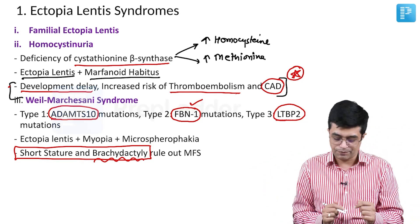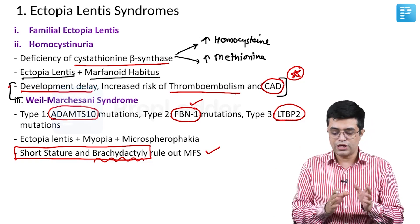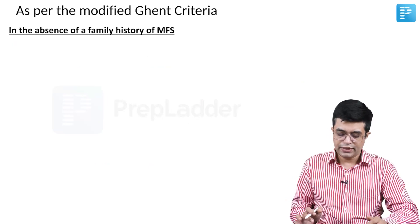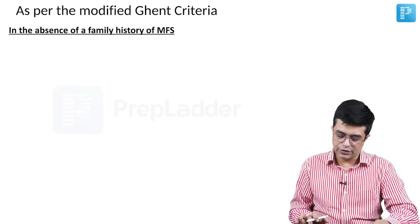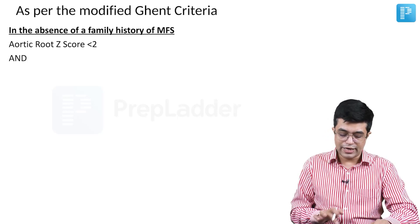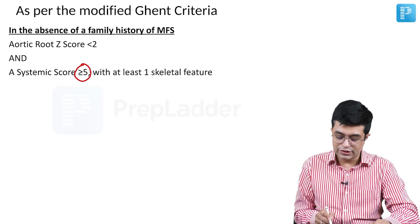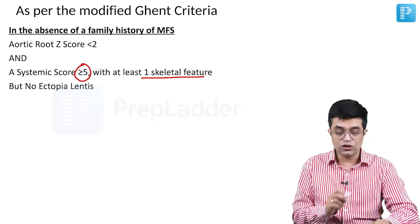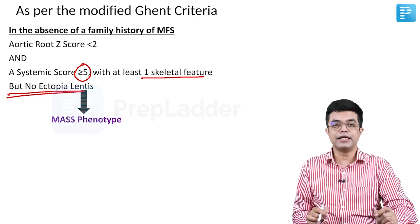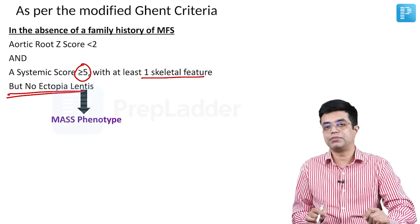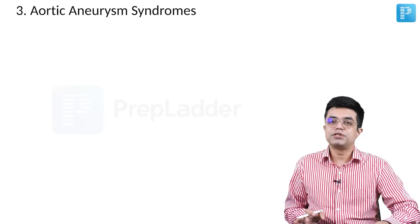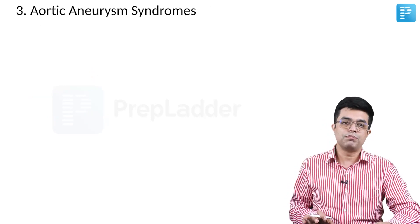As per the modified Ghent criteria, in the absence of a family history of Marfan syndrome, if the aortic root Z-score is less than 2 and systemic score is equal to or more than 5 with at least one skeletal feature but no ectopia lentis, you should consider the likely possibility as MASS phenotype. The third category is aortic aneurysm syndromes.